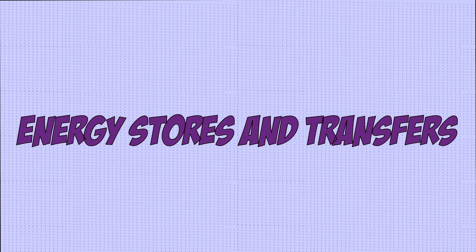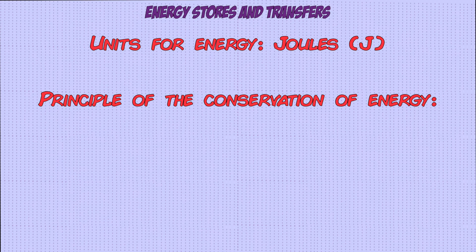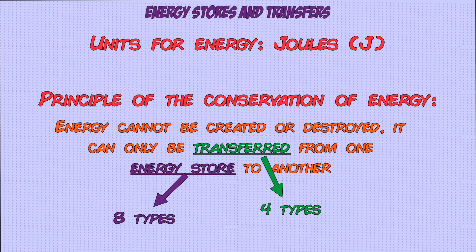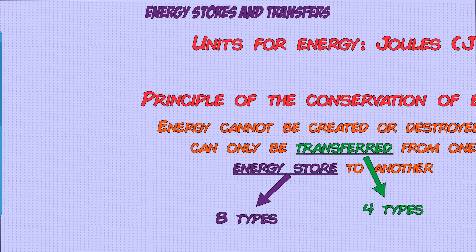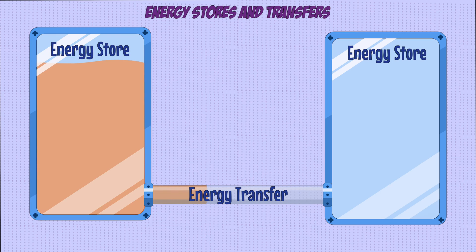Energy is measured in joules, and the principle of conservation of energy states that energy cannot be created or destroyed — it can only be transferred from one store to another. There are eight different types of energy stores and four different types of energy transfers. You can think of energy stores as containers that hold energy, and transfers as pipes that move energy from one store to another.